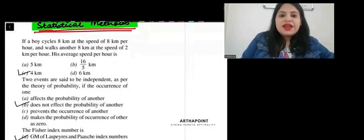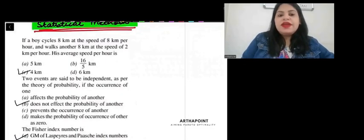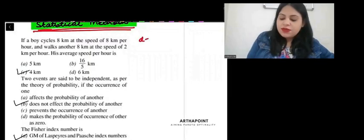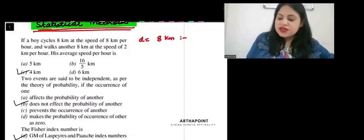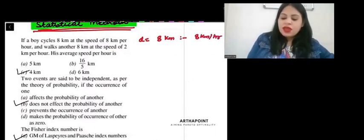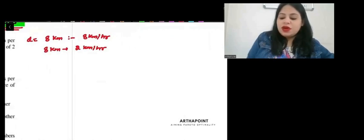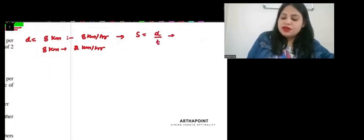If a boy cycles 8 km at a speed of 8 km per hour, and walks another 8 km at the speed of 2 km per hour. Let me tell you here that speed is distance by time. So, what will be the time here? Time will be distance by speed.